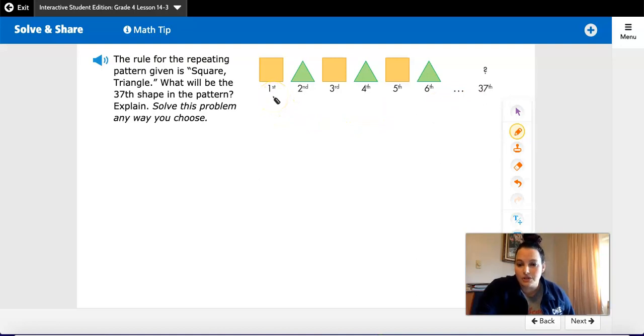And you could also have just looked at this pattern and thought of a pattern feature that they haven't told you. 1, 3, and 5 are all squares. 2, 4, and 6 are all triangles.